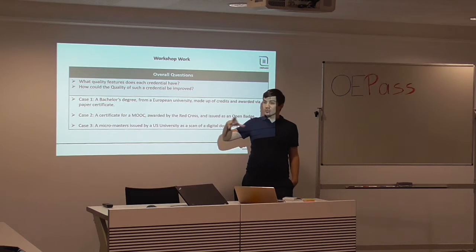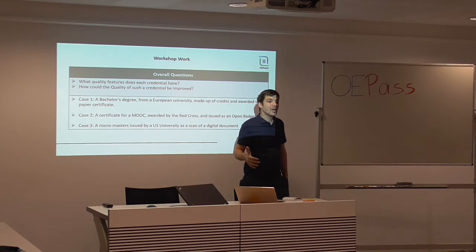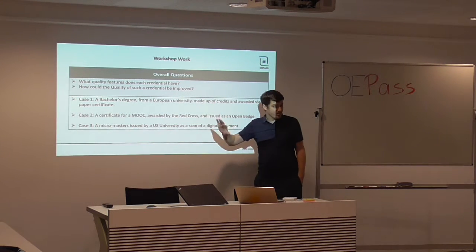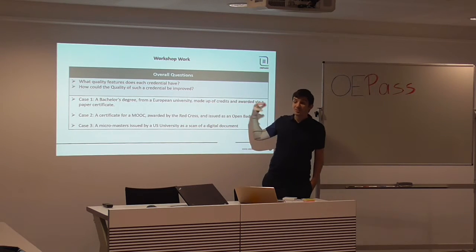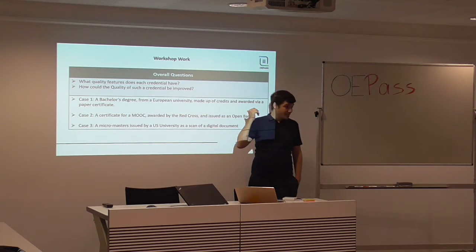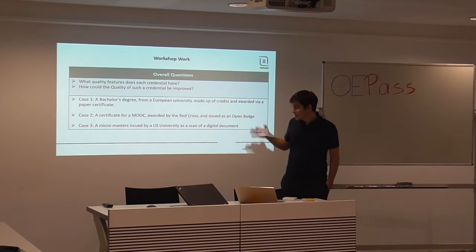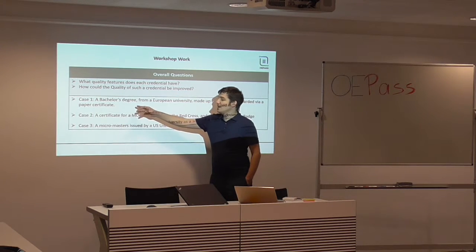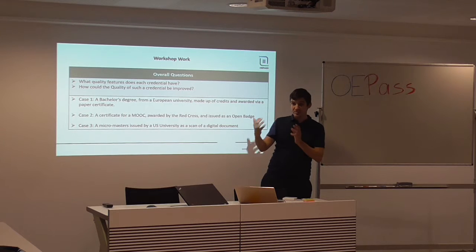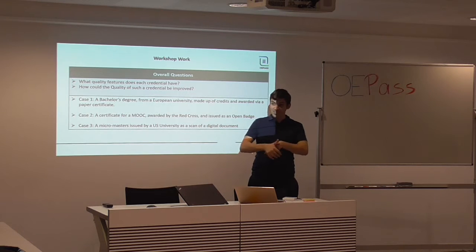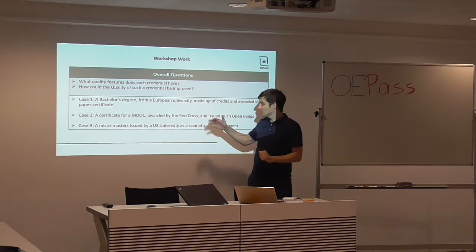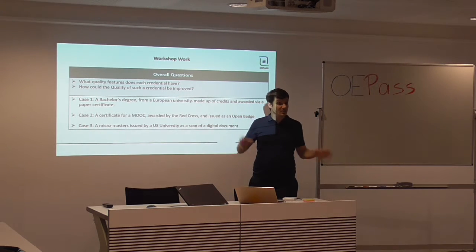We are going to ask you to try and use some of these concepts. We have two basic questions for you across three different types of credentials. What are the quality features a typical credential already has? And how could the quality of such a credential be improved? We're going to ask you to use the framework to look at: first, a bachelor's degree from a European university made up of credits and awarded by a paper certificate; second, a MOOC certificate awarded by the Red Cross issued as an open badge; and third, a MicroMasters issued by a US university as a signed scanned PDF document.